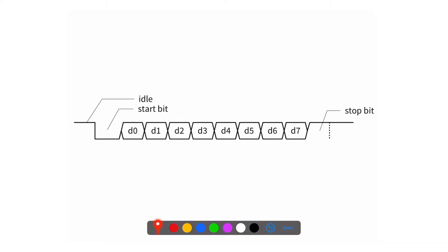Then the transmitter starts sending the bits of data one at a time. What we see here is exactly one byte, from D0 to D8. UART generally sends the least significant bit first, then the next significant bit, and so forth. So we send D0, then D1, then D2, then D3, all the way to D7.